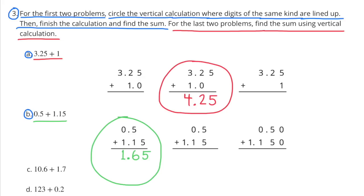Number 3. For the first two problems, circle the vertical calculation where digits of the same kind are lined up. Then, finish the calculation and find the sum. For the last two problems, find the sum using vertical calculation.